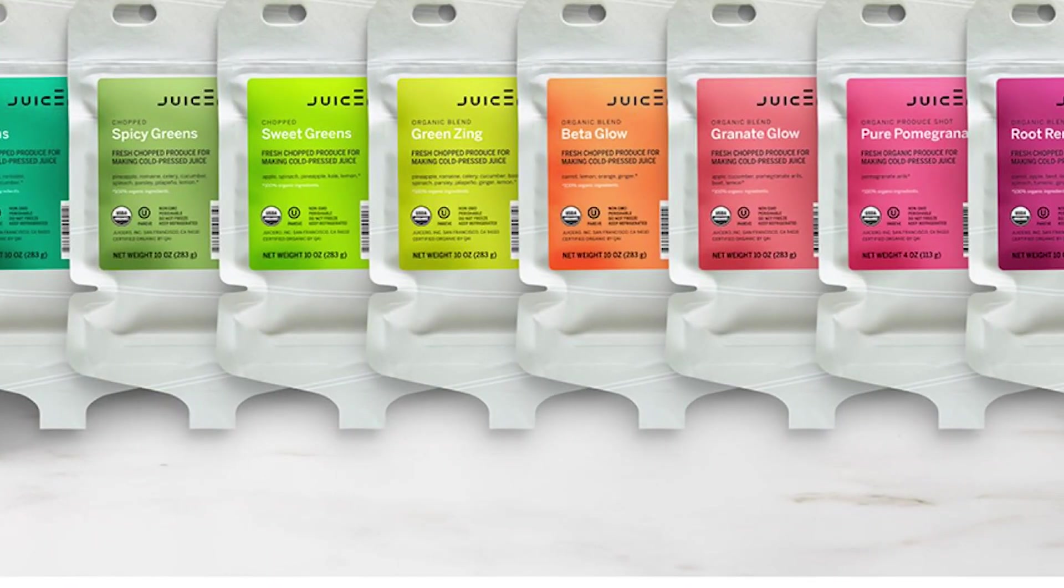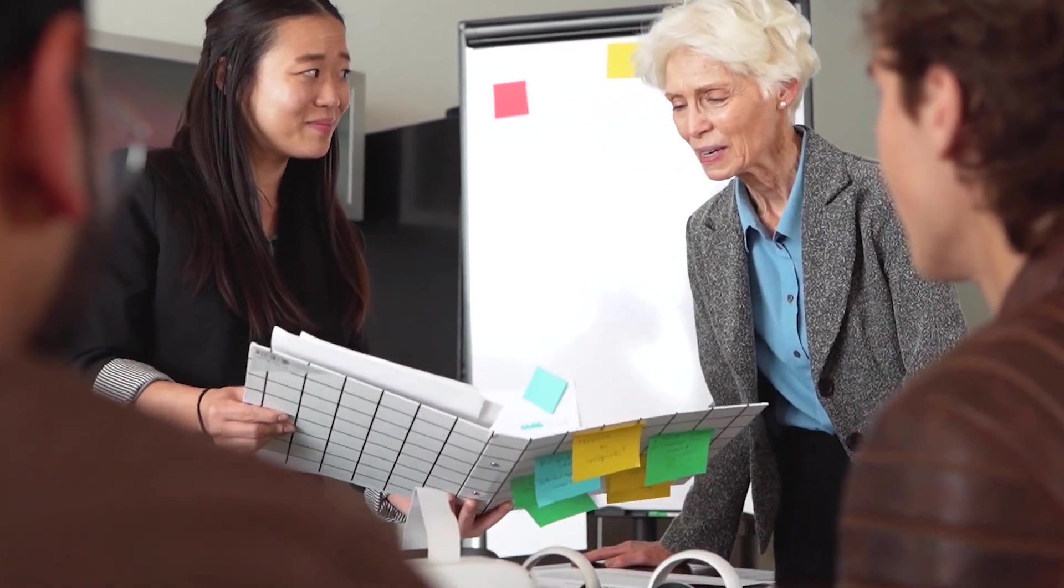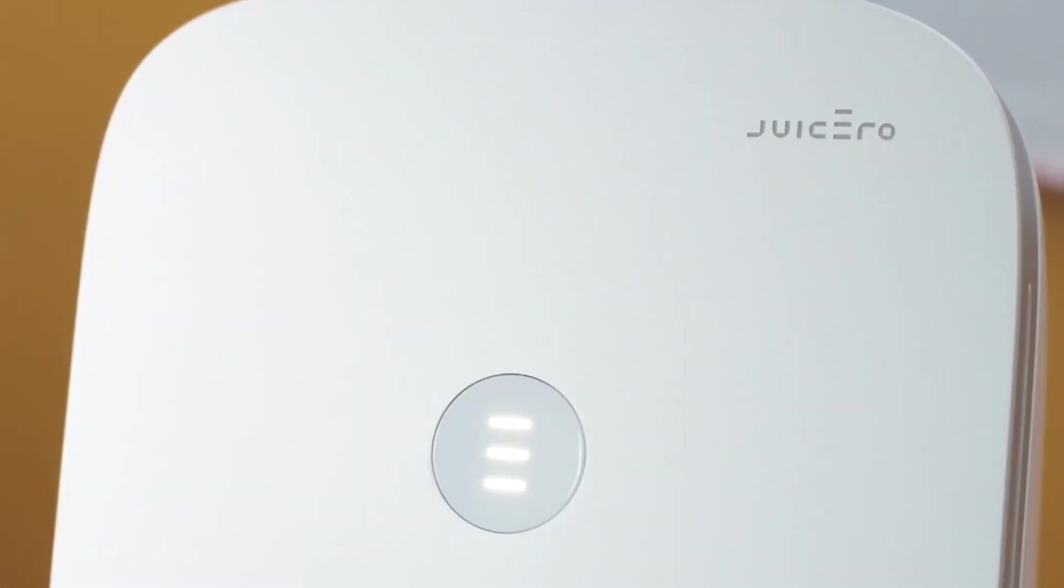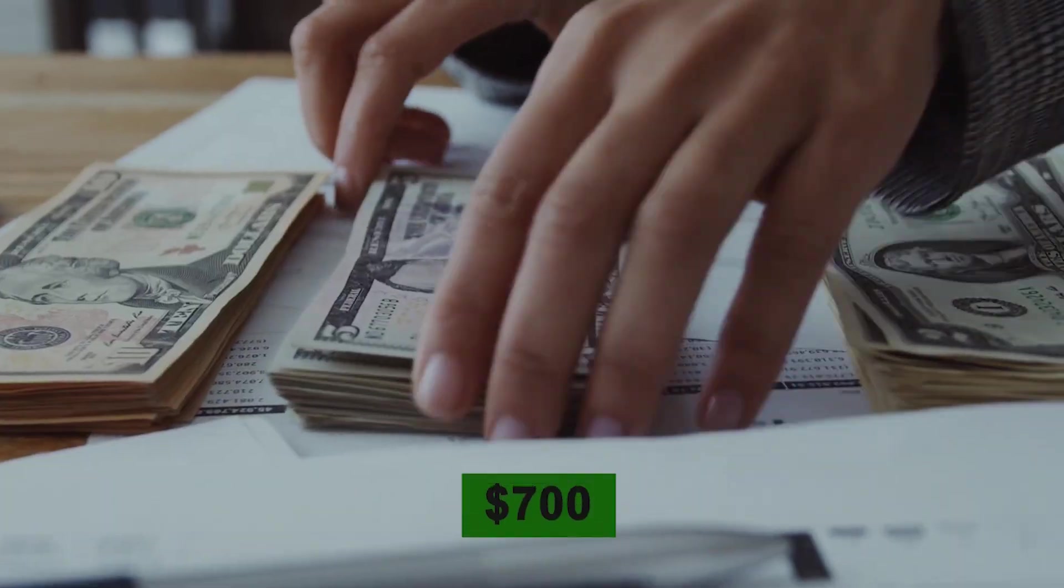After three years of development, Juicero launched its flagship product, the Juicero Press, in April 2016, accompanied by an additional $28 million in venture capital. The juicer garnered considerable media attention, although criticism arose due to its high price tag of nearly $700.